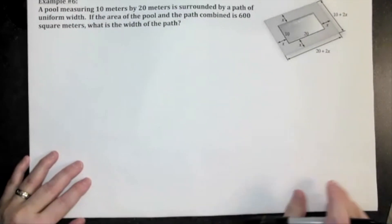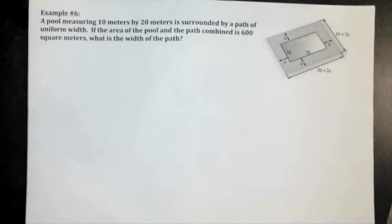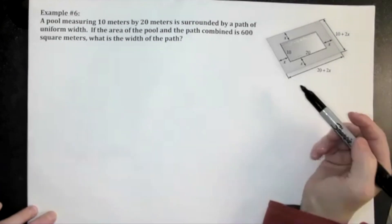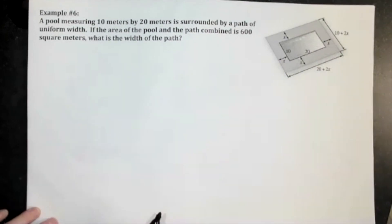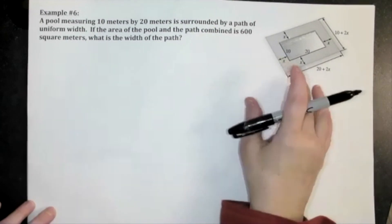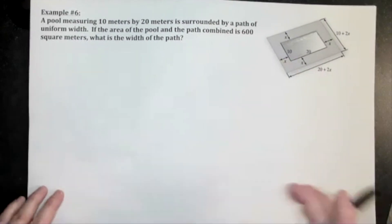Alright, so again this is a type of landscape problem. It's talking about something with a path around it. This particular one is a pool measuring 10 by 20. The diagram is given, but chances are you're going to have to draw this, so even though it's there I'm going to show you how to draw it.